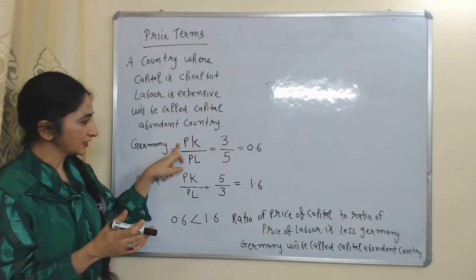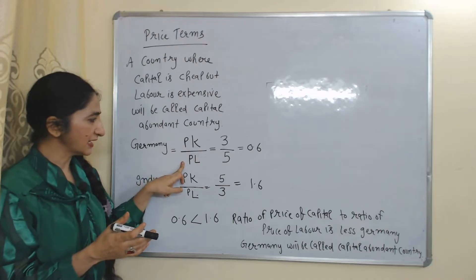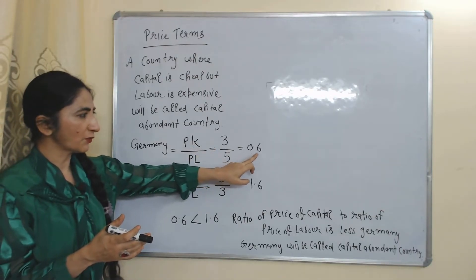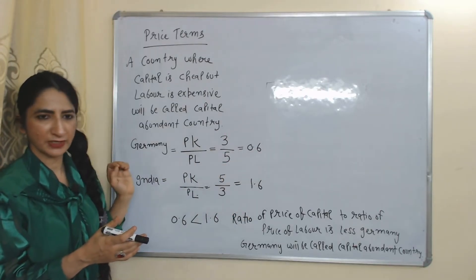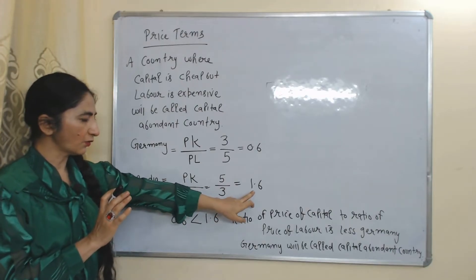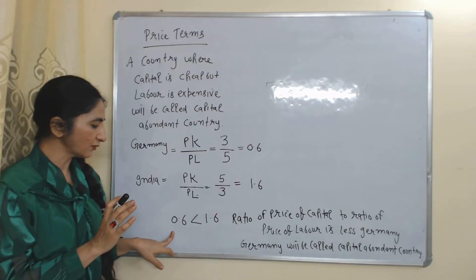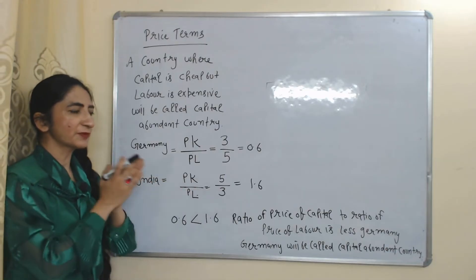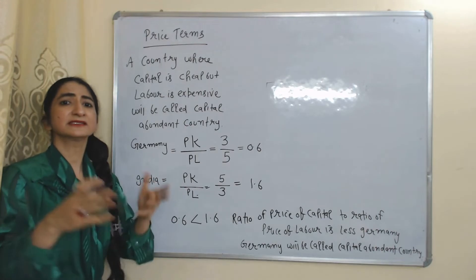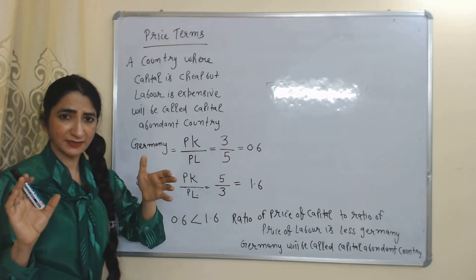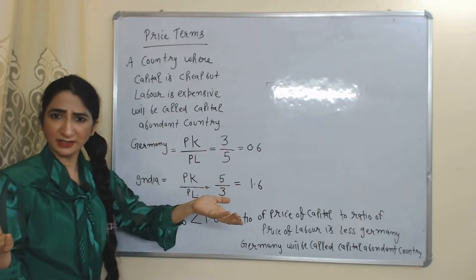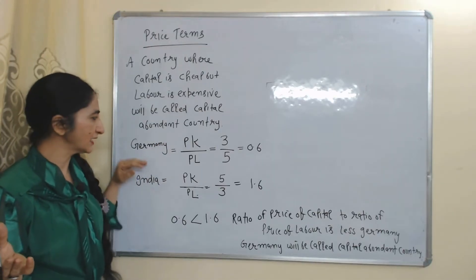The formula for calculating this is PK over PL, where PK means the price of capital and PL means price of labor. Suppose the price of capital in Germany is 3 and the price of labor is 5, so 3 over 5 equals 0.6. Similarly, we calculate the ratio for India, and the answer is 1.6. Since 1.6 is more than 0.6, the ratio of price of capital to price of labor is less in Germany, meaning the price of capital is relatively cheaper in Germany. Therefore, Germany is a capital-abundant country, and India is a labor-abundant country.